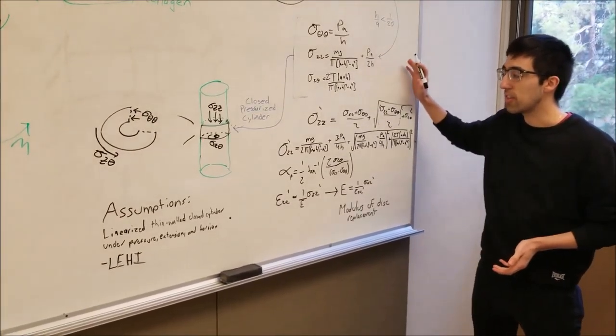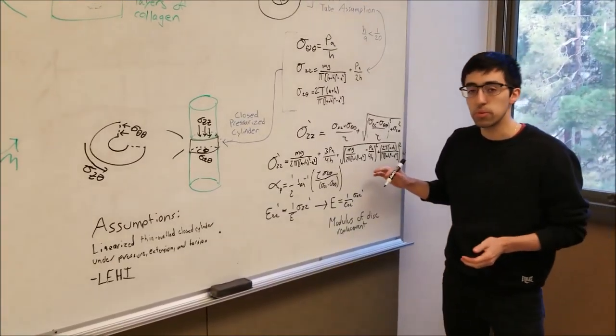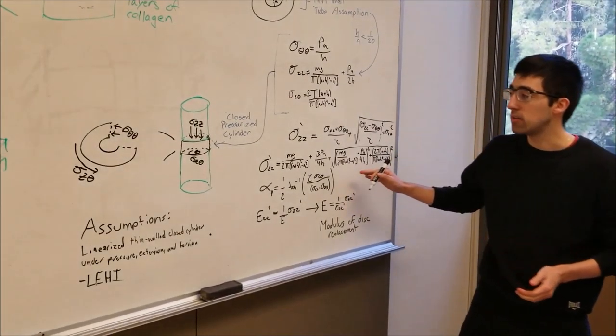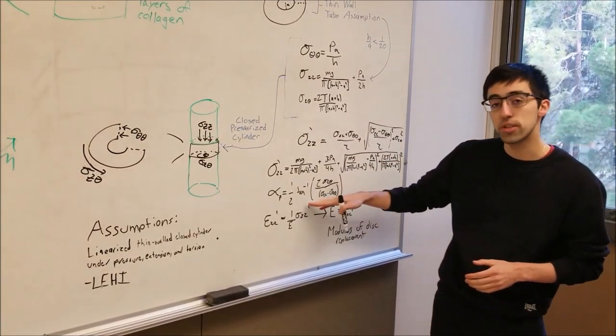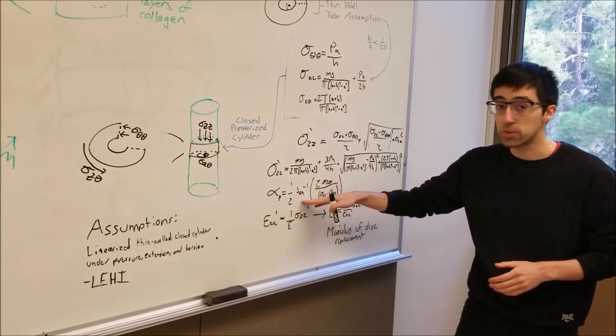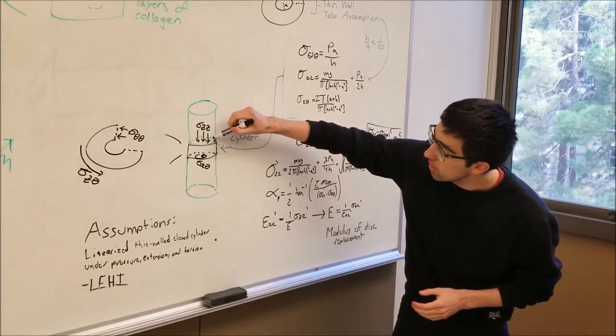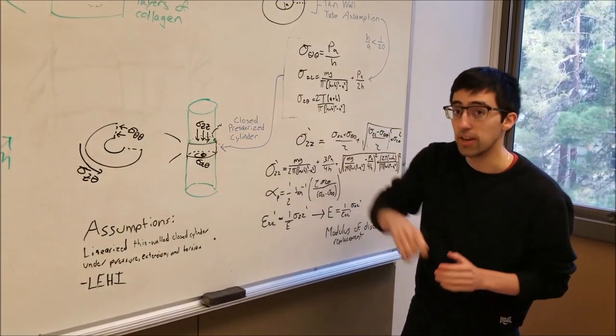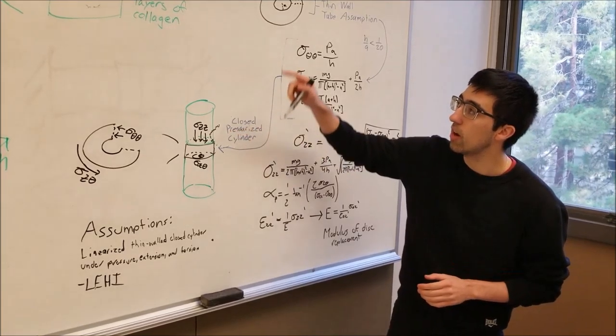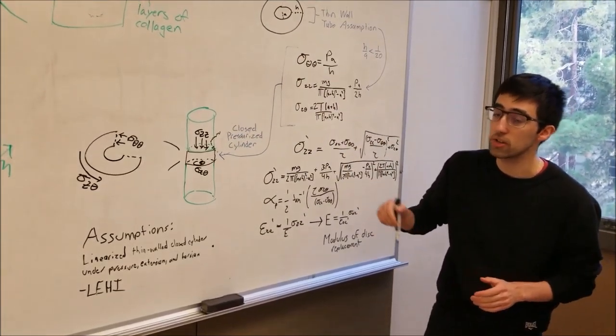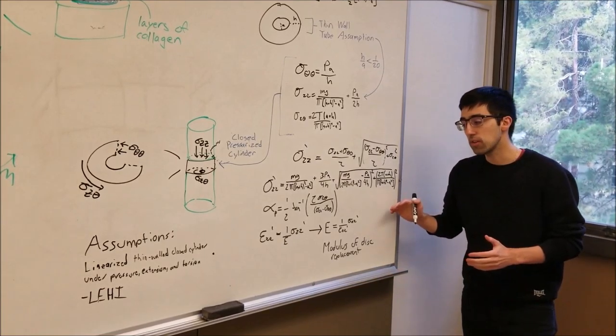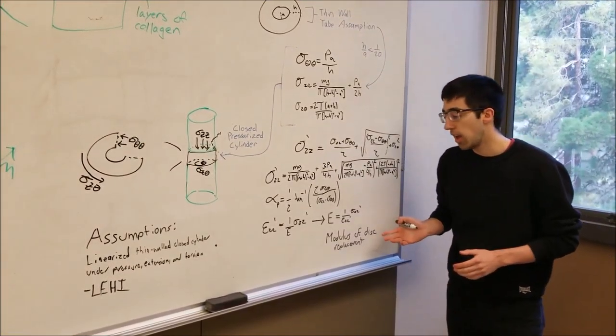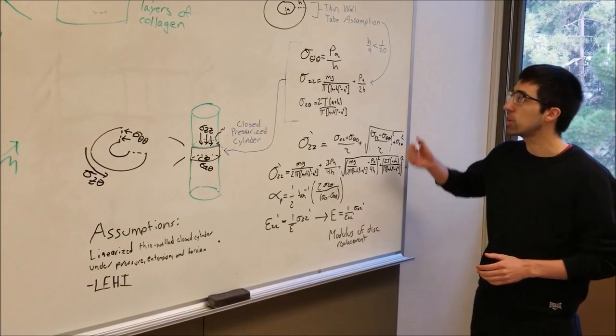Putting all this together, we can solve for the principal axial stress, and if we know this principal axial stress and where its max value is at, we can use this equation for the principal angle to find where these micro stresses and cracks can occur. We know that our liquid gelatinous core will leak out, and so putting all that together we can actually solve for the Young's modulus.